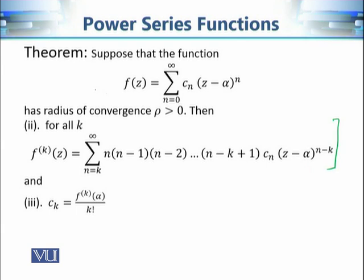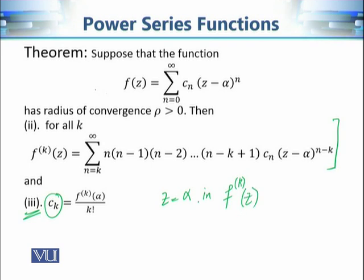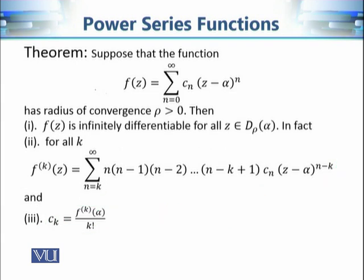The result now established is that the k-th derivative of f is given by the corresponding differentiated series. For the third part of the theorem, to find c_k simply substitute z equal to α into the expression for the k-th derivative of f(z). This gives c_k equal to the k-th derivative of f evaluated at α, divided by k factorial. Since the function is differentiable for any k, it is infinitely differentiable for all z in the domain.